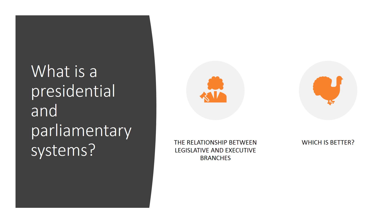When we talk about presidential and parliamentary systems, we're mainly talking about different types of relationship between the legislative and the executive branch. In most cases, the judiciary branch is not really important in determining the type of political system. Around the globe there are three political systems: the presidential system, the parliamentary system, and the semi-presidential system. We're going to discuss the presidential system today, and later the parliamentary system, and maybe the semi-presidential system.